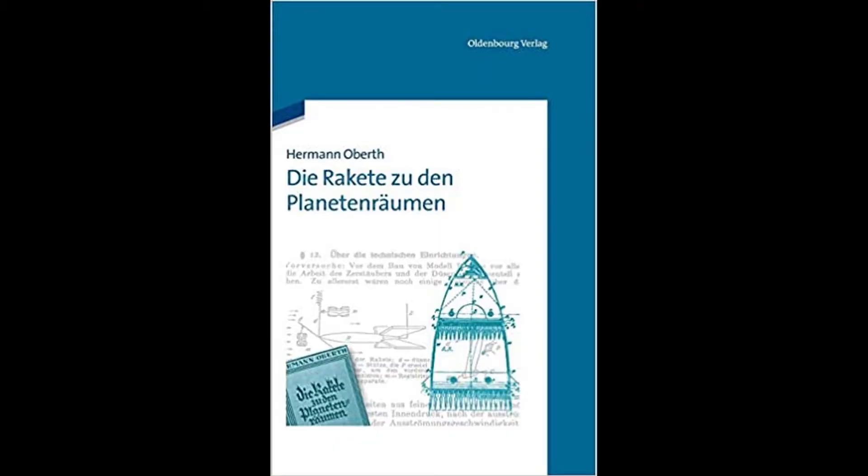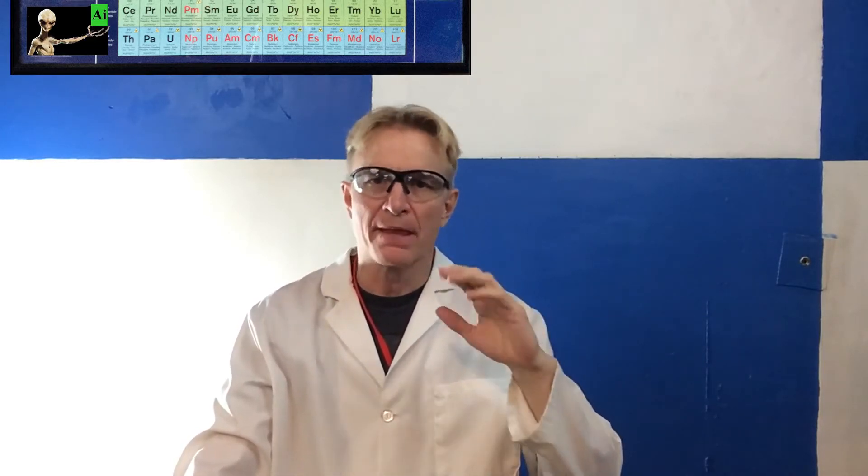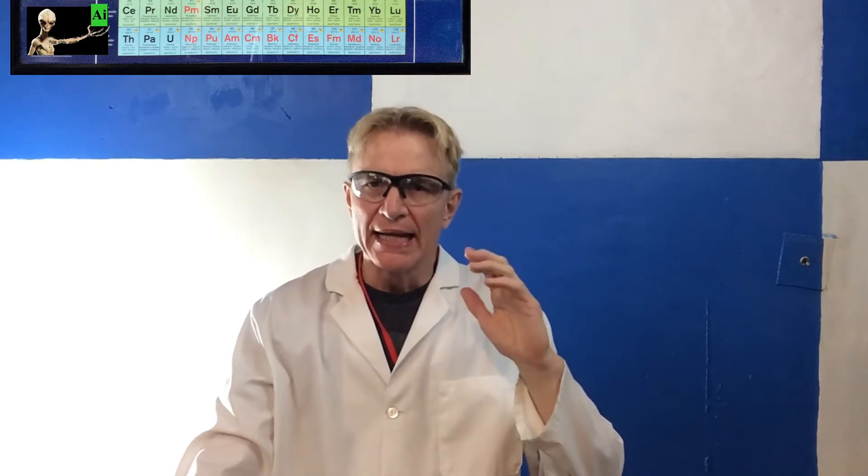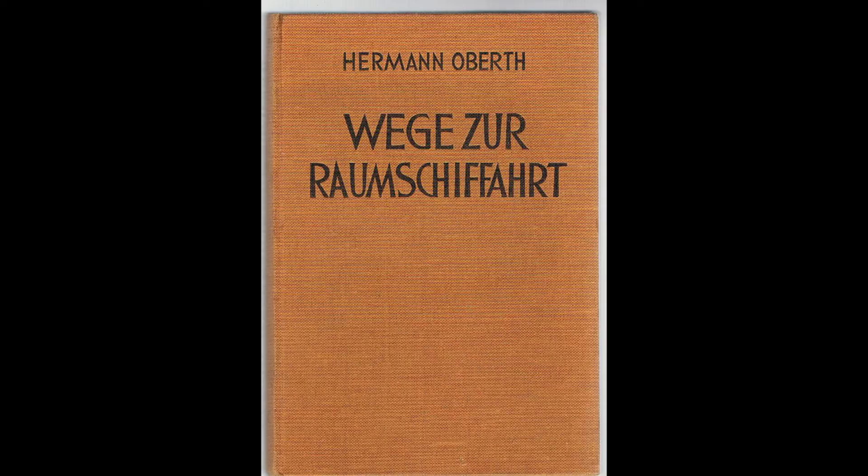In 1923 he wrote a 92-page work called Die Rakete zu den Planetenräumen—the Rocket into Planetary Space. Then in 1929 he expanded the work into a 400-page book named Wege zur Raumschiffahrt—Ways to Space Flight.